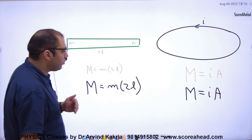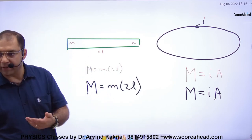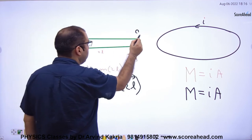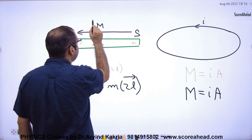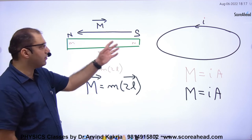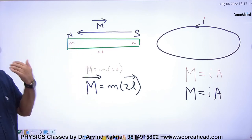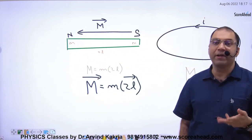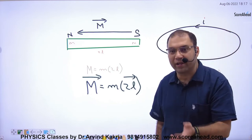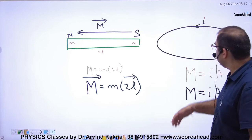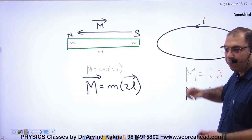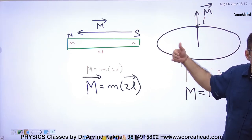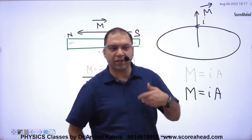Now, regarding the direction of capital M — since capital M is a vector — for a bar magnet the direction is from south to north. But for a current-carrying loop the poles are not visible, so the rule is different: use the right-hand rule. Curl the four fingers along the direction of current, and the thumb gives the direction of capital M. This is the same rule used to find B in a circular loop.